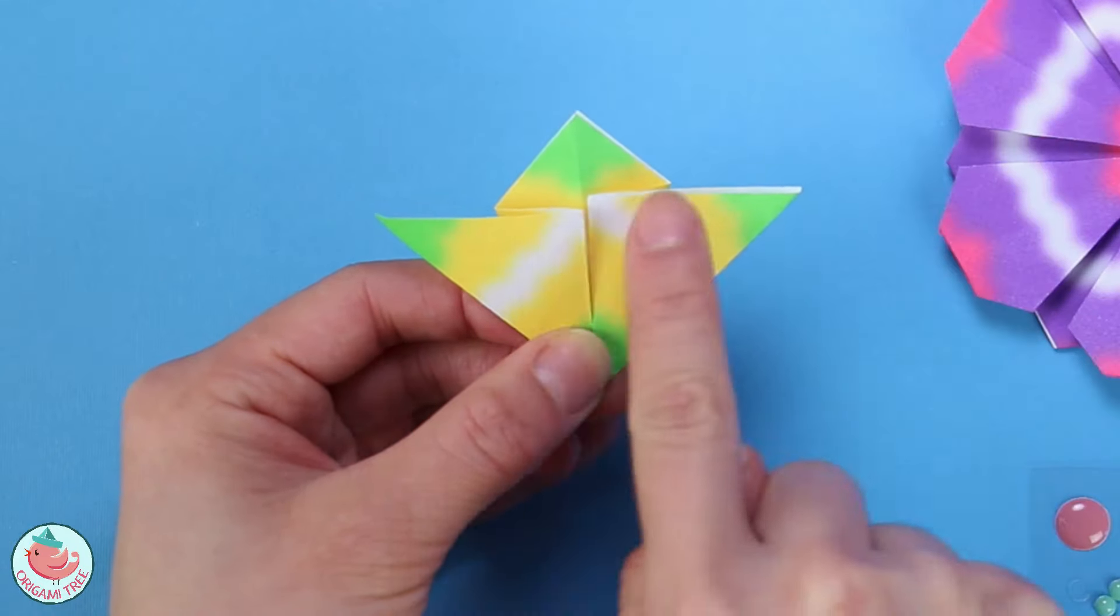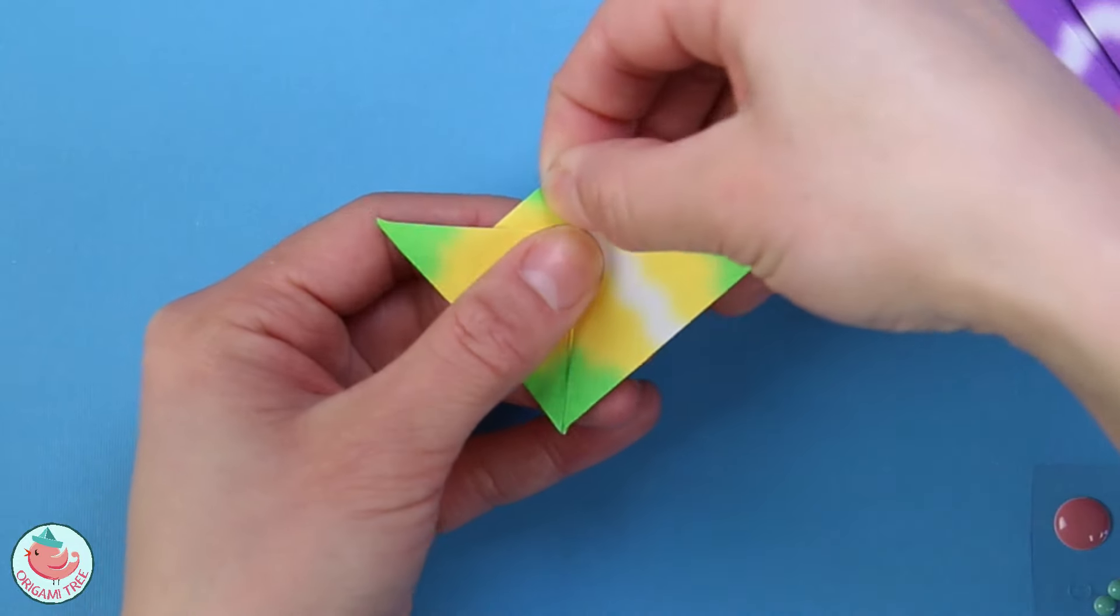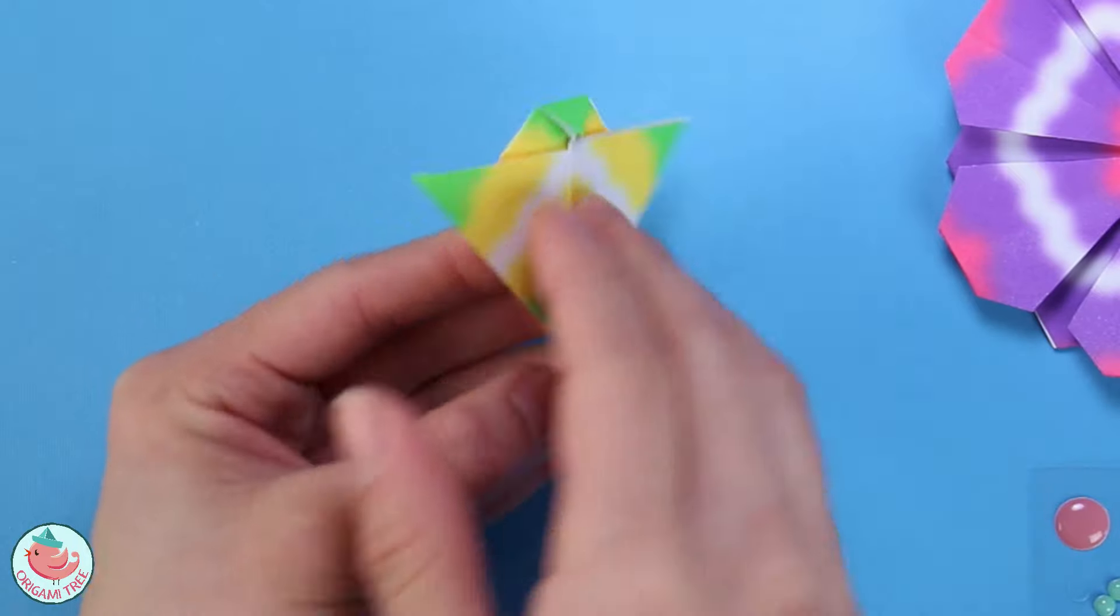Now let's take this tip and we're going to align it to that horizontal line. So we're going to take this and fold it straight down just like that. Flip it around.